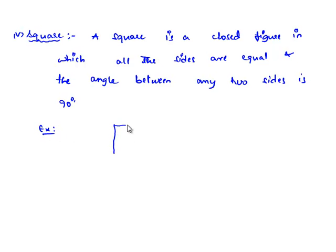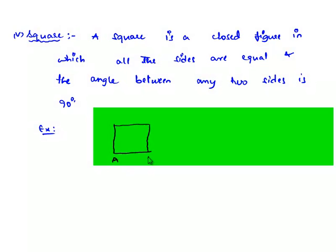Let us consider a closed figure ABCD. It is said to be a square if AB equals BC equals CD equals DA, and angle A equals angle B equals angle C equals angle D equals 90 degrees.